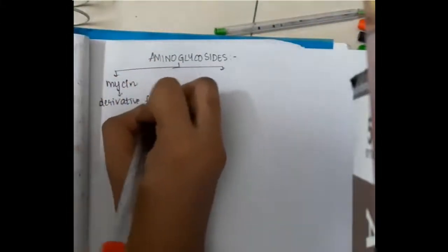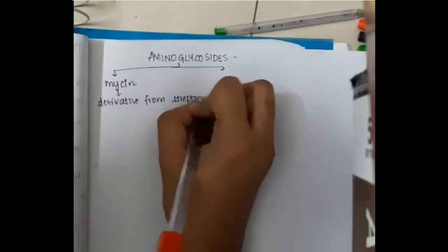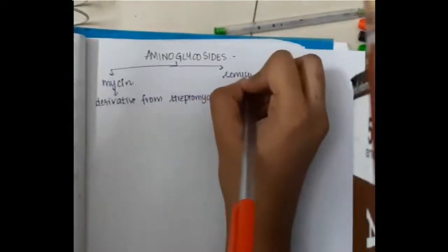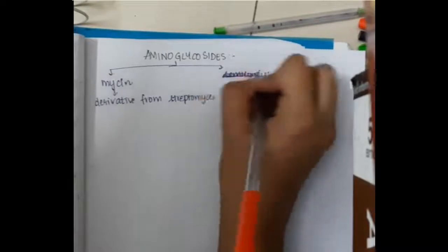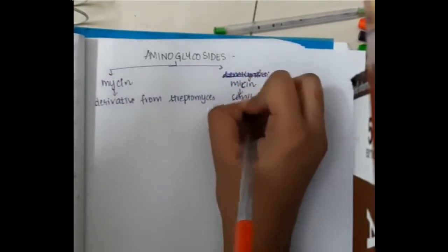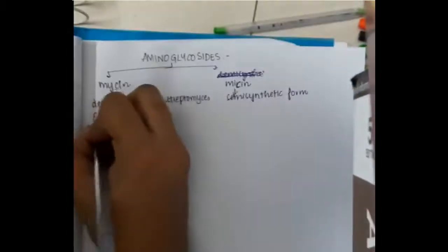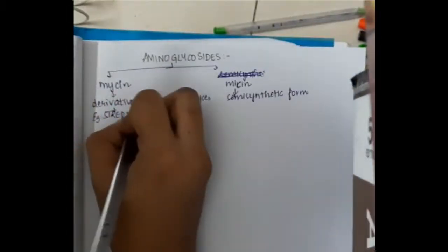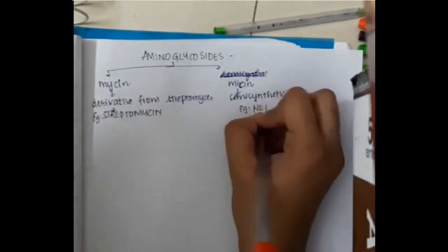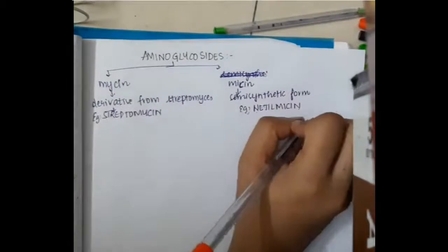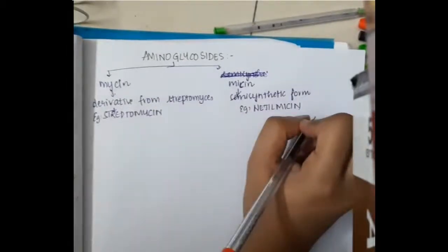Aminoglycosides have two types. First, 'mycin,' which is a natural form derived from Streptomyces — for example, streptomycin. Second, 'micin,' which is a semi-synthetic form — for example, netilmicin.